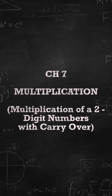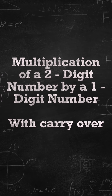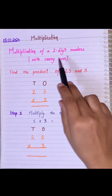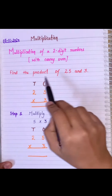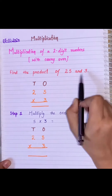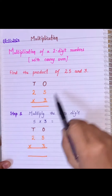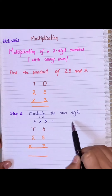Chapter 7: Multiplication. Today we will learn how to multiply a two-digit number by a one-digit number with carryover. So let's begin multiplication of two-digit numbers. Let's start — find the product of 25 and 3. I have taken the question 25 multiplied by 3.